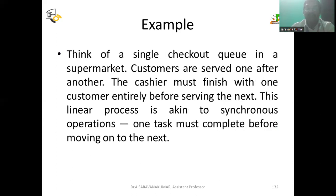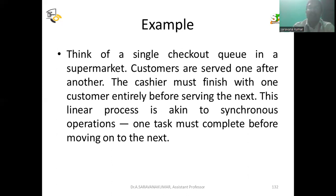Think of a single checkout queue in a supermarket: customers are served one after another. The cashier must finish with one customer entirely before serving the next. This linear process is akin to synchronized operations — one task must complete before moving to the next. For example, in a billing transaction, you check the bill, receive the cash, and then move on to the next customer.